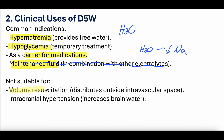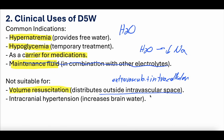D5W is not suitable for volume resuscitation. As we said, it distributes outside the intravascular space — going both extravascular and intracellular — which means only about 8%, or 80 cc from one liter, stays intravascular. You also don't want to use it in intracranial hypertension, because the hypotonicity can lead to worsening cerebral edema.